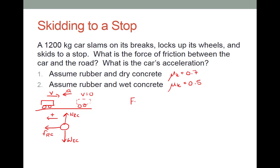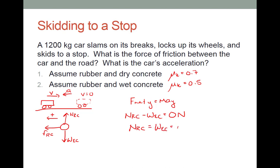The first thing I'm going to do — which will be valid for both parts — is look at the vertical direction, because I need a value for the normal force in order to plug into the frictional force equation. In the vertical direction I have no acceleration, so the normal force minus the weight equals zero, which gives me the normal force equals mg. That's 1200 kilograms times 9.8 meters per second squared, which equals 11,760 newtons.